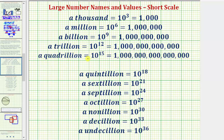A quadrillion equals 10 to the 15th, which equals one followed by 15 zeros. The remaining numbers will just be expressed as powers of 10. Just remember though, to write them out, we'd have a one followed by the number of zeros indicated by the exponent.